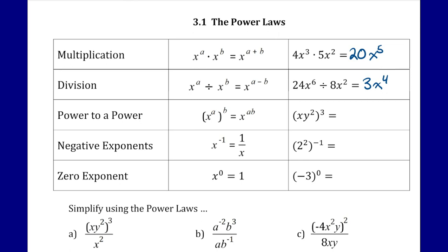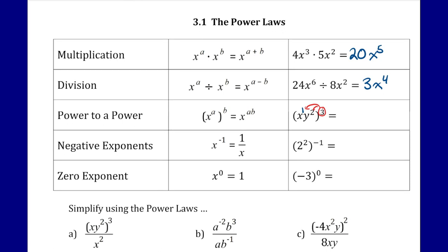For power to a power, we multiply our exponents. In our example, xy squared all to the power of 3. Keep in mind that if we don't see an exponent we assume there's a 1, so the x has an exponent of 1. This exponent 3 applies to both parts: x to the power of 1 times 3 is 3, and y to the power of 2 times 3 is 6. We multiply exponents for each individual power.